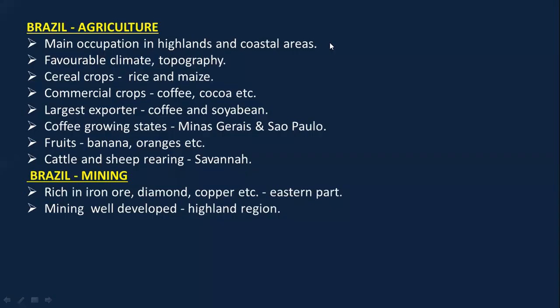Now let's talk about the economy and occupations of Brazil, starting with agriculture. The main occupation of people in the highlands and coastal areas is agriculture, because they have favorable climate and good topography. The cereal crops grown here are rice and maize. The commercial crops are coffee, cocoa, etc.